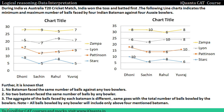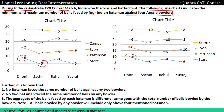Hi everyone. In this video we will understand how we can solve this type of set. In this set we are given that during India vs Australia T20 cricket match, India won the toss and batted first. The following line chart indicates the minimum and maximum number of balls faced by four Indian batsmen against four Aussie bowlers.